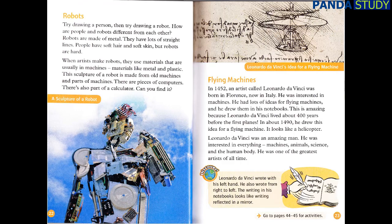Robots. Try drawing a person. Then, try drawing a robot. How are people and robots different from each other? Robots are made of metal. They have lots of straight lines. People have soft hair and soft skin, but robots are hard. When artists make robots, they use materials that are usually in machines — materials like metal and plastic. This sculpture of a robot is made from old machines and parts of machines. There are pieces of computers. There's also part of a calculator. Can you find it?